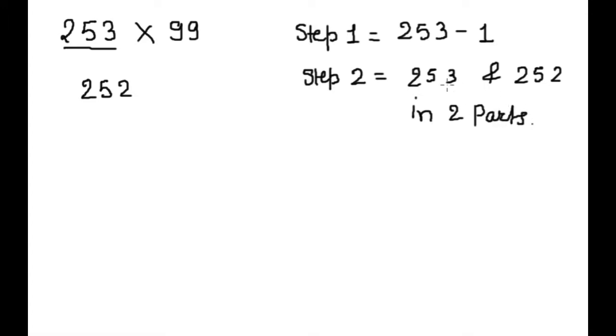We will count from this side 2 digit and we will divide in 2 parts like this. So this 52, this 52 we will subtract from 99 and this is 7 and this is 4. Now 252, 47. We divided this 253 in 2 parts. This first part we will subtract.